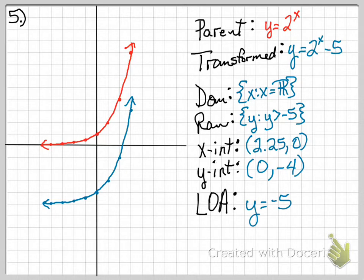Domain is all real numbers. My range now has changed because we shifted down. My range is now y is greater than negative 5.